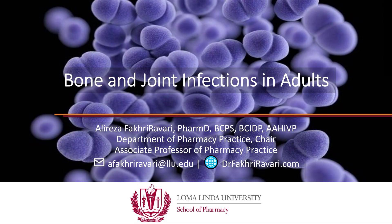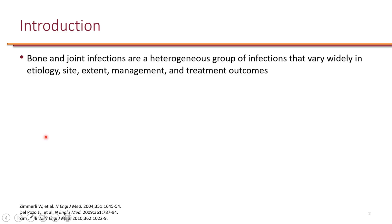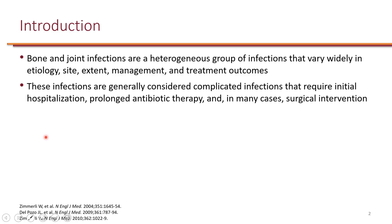I'm Dr. Fakir Ovely and this is bone and joint infections in adults. Bone and joint infections are a group of infections that affect various bones as well as joints, and occasionally if there is hardware in place of a joint. These infections are generally complicated and often require hospitalization as well as long-term antibiotics, sometimes even lifetime antibiotic therapy to suppress the infection.